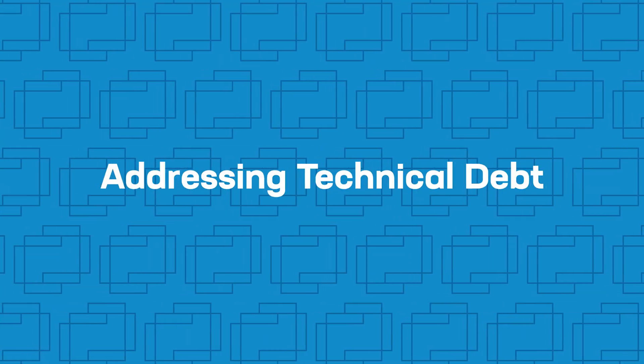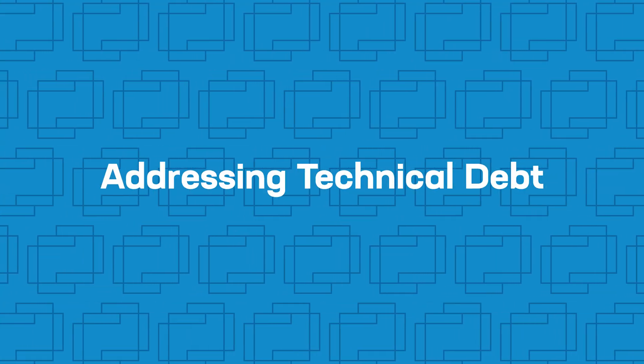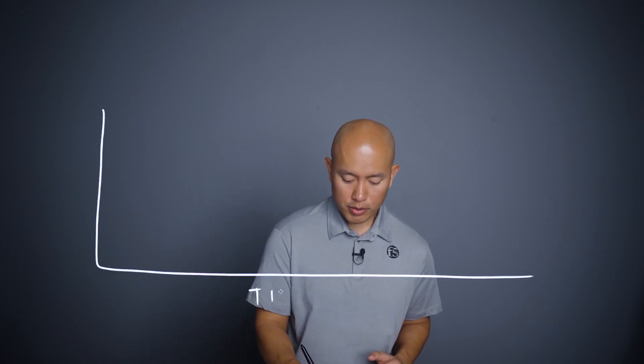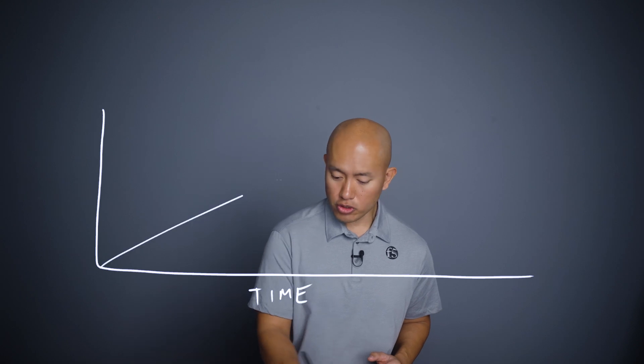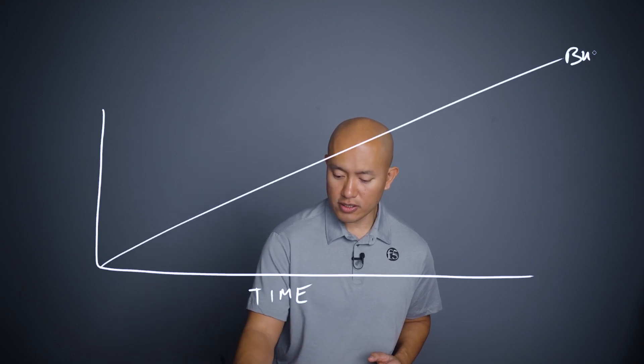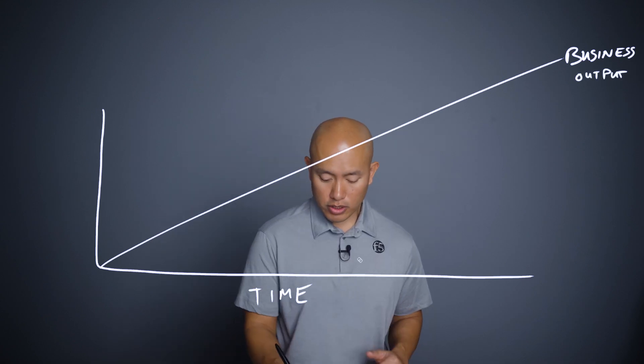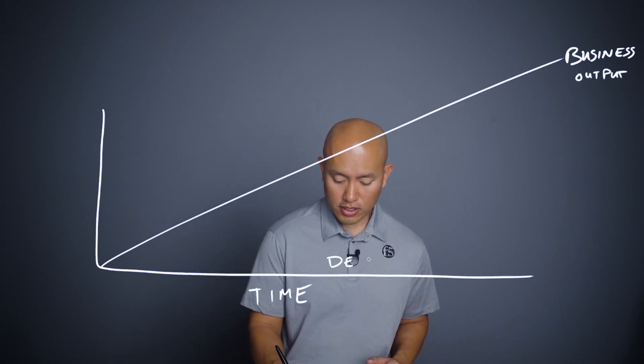This also helps with technical debt. Technical debt is the accumulation of design choices that were potentially correct at the time — or might not have been — and have a negative impact on the overall system's operational efficiency. So if we were to draw out what that looks like, I'm going to draw this graph here. Time is along the bottom, and I'm going to draw this line here — this is the business output — and along the bottom here I'm going to put the technical debt.